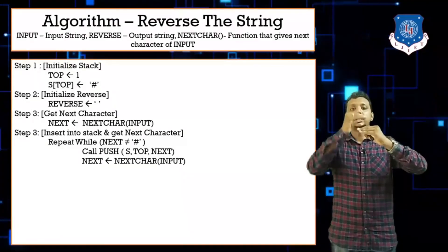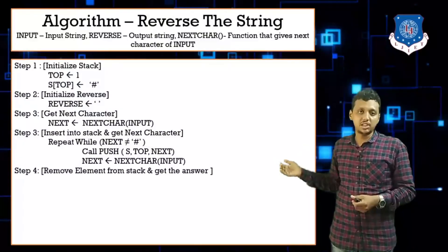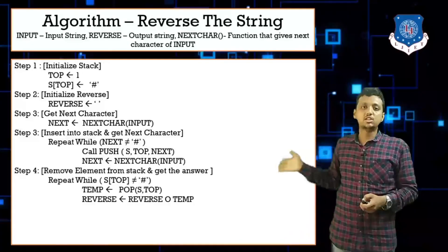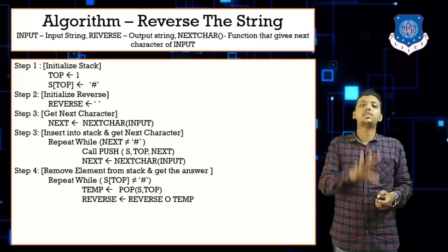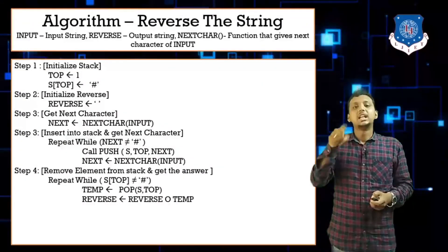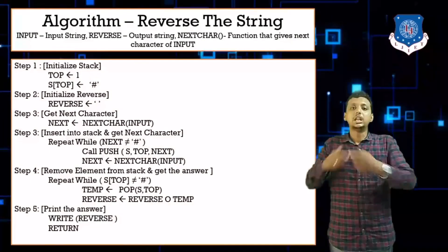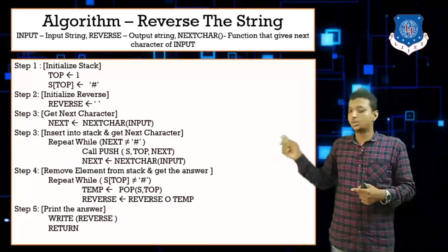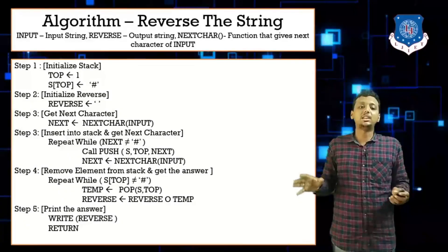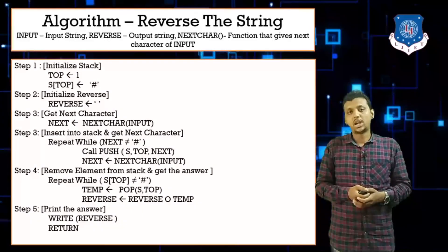Now pop elements from the stack while S[top] ≠ hash: pop into temp, then reverse = reverse + temp. First pop gives 'a', reverse = 'a'; then 't', 'a', 'd' — each concatenated. The final reverse string is 'atad'. This loop continues until S[top] is hash, giving us the final reversed answer.